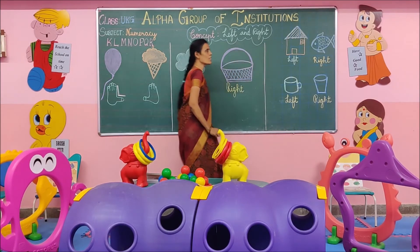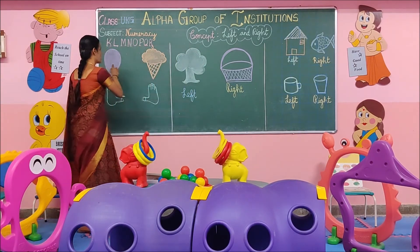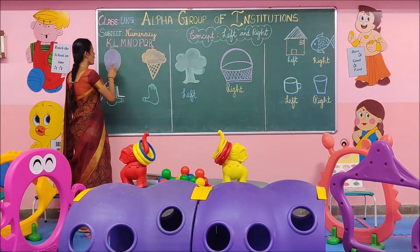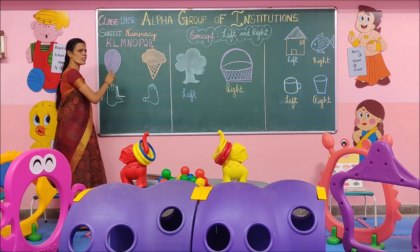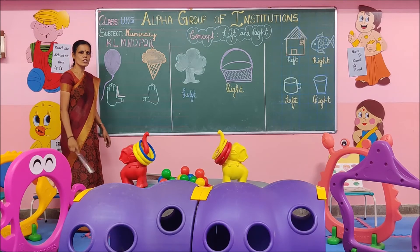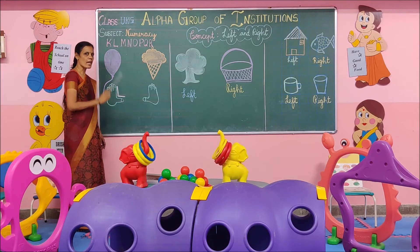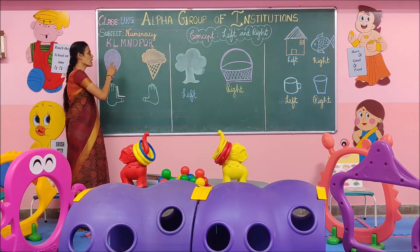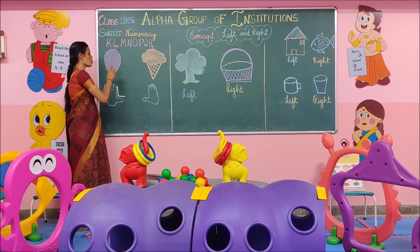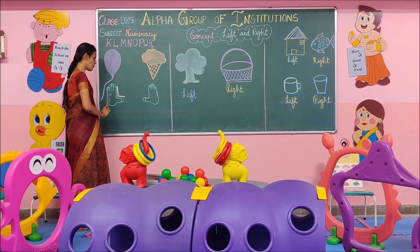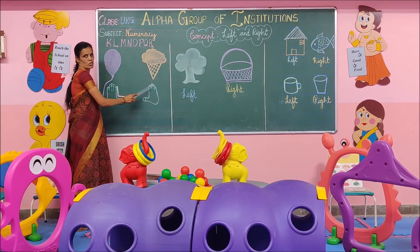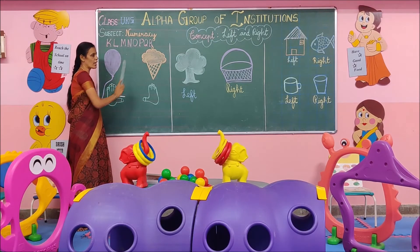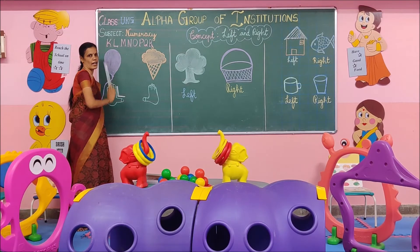Here I have written alphabets K to R. What comes first? L comes first. So left comes first, and then right.